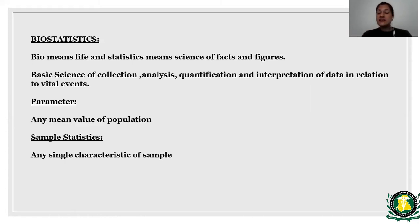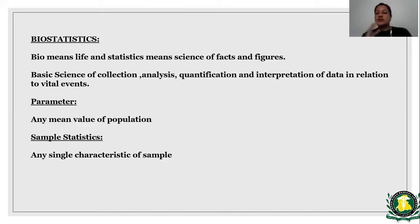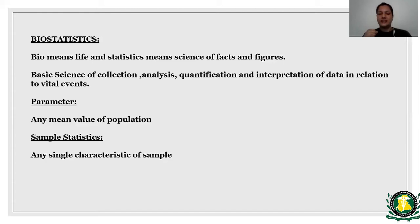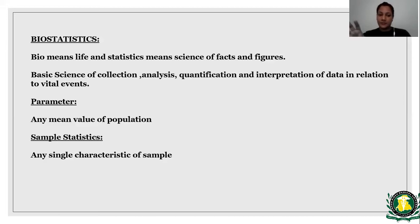Sample statistics refers to any single characteristic of the population — for example, a certain age group like children, senior citizens above 60, or a geographic grouping like African descendants or Hispanic/Latin. Any characteristic on the basis of which we define that population sample is called sample statistics.